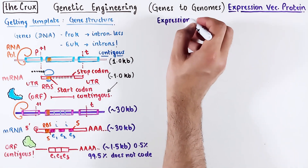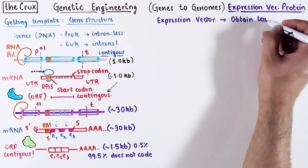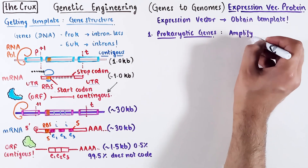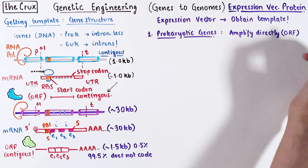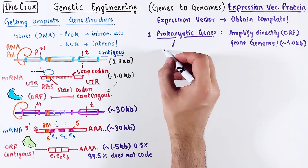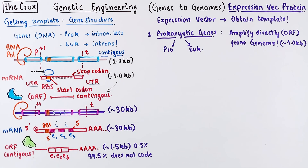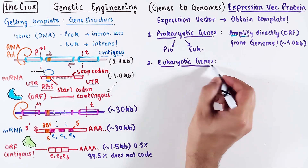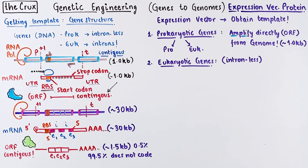Now that you understand gene and RNA structure, let's discuss how you would get a template for your protein expression vector. For a prokaryotic gene, you can amplify the gene, and therefore the ORF, directly from the genome. On average it'll be a reasonable 1 kb PCR, and you can express that gene in either a prokaryote or a eukaryotic host. The amplification uses primers near the start and stop codons of the ORF. The choice of ribosome binding site will depend on the expression host. Intron-less eukaryotic genes are simple — just like bacteria, you amplify them right off the DNA.